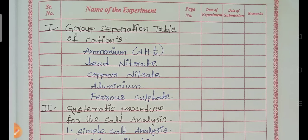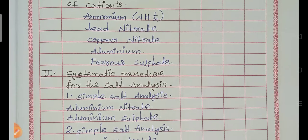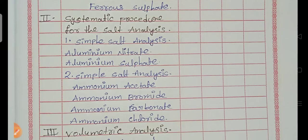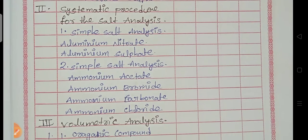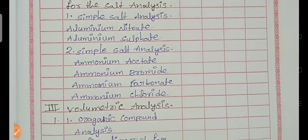So this is the index. The same thing you have to write in the practical record like a group separation table of cations: ammonium, lead nitrate, copper nitrate and aluminium, ferrous sulphate and all. Systematic procedure for the salt analysis, simple salt analysis, aluminium nitrate, aluminium sulphate.